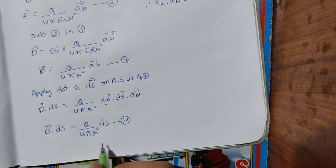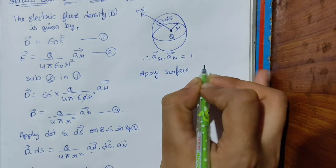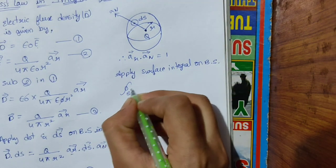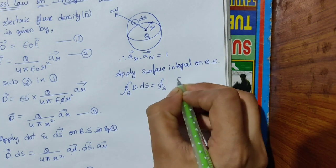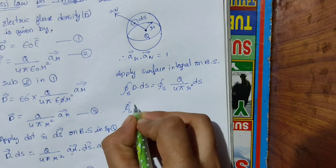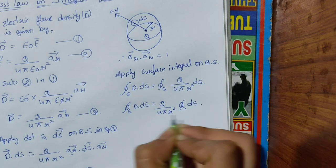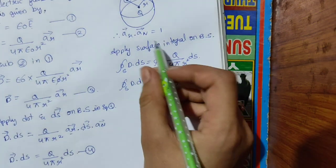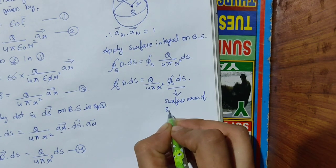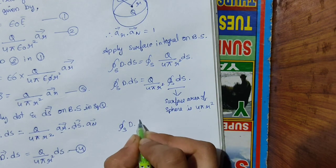Now apply the surface integral on both sides. So ∮ D · dS = ∮ Q / (4π r²) · dS. Taking the constant outside: ∮ D · dS = Q / (4π r²) · ∮ dS. This surface integral of dS is the surface area of the sphere, which is 4πr².